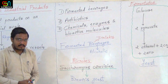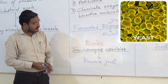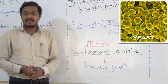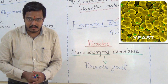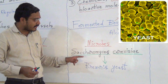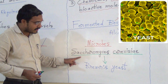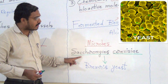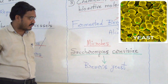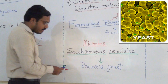The most important thing is: which microbes are used in the production of alcoholic beverages? They use the same microbes used in bread preparation. That microbe is called Saccharomyces cerevisiae. It is used to produce alcoholic beverages. Hence it is also called brewer's yeast.